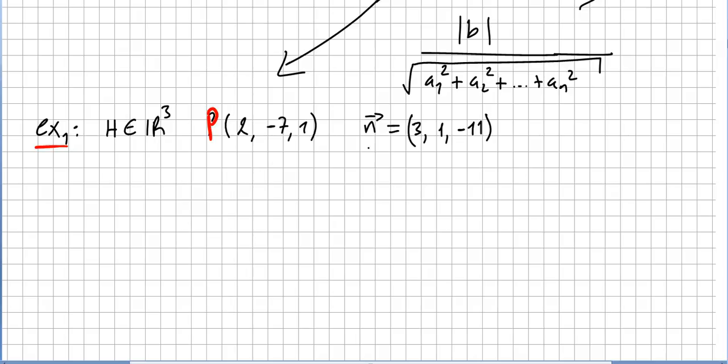This is really easy, right? Because at the end of the day what we have is the normal times, so R^3, so that will be (x, y, z), equal to a certain constant. So the normal is (3, 1, -11) times (x, y, z) equals a constant. This is another way of writing the hyperplane. You can write it as a linear equation or you can write it this way.